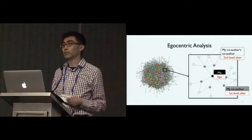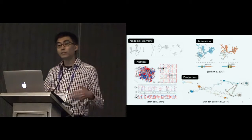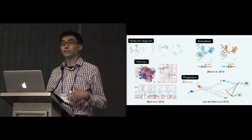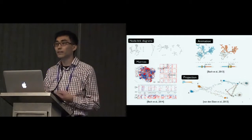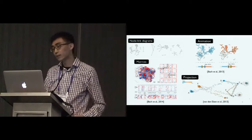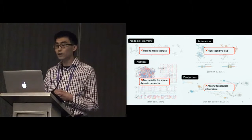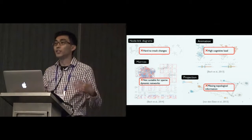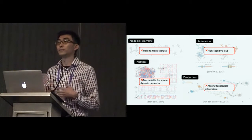As the whole network changes across time, so does the ego network. There exist many approaches for visualizing dynamic networks in the literature. The most basic approach is to use small multiples of node-link diagrams. There are also animation-based approaches, and you can visualize the dynamic network as a series of matrices. You can also use projection to reduce the whole network into a single data point, and there was a talk this morning about visualizing dynamic networks using comics.